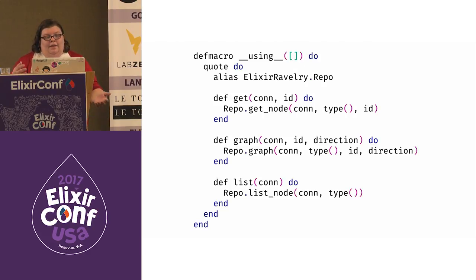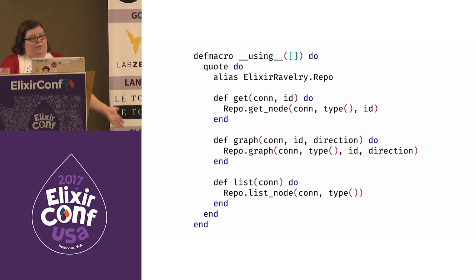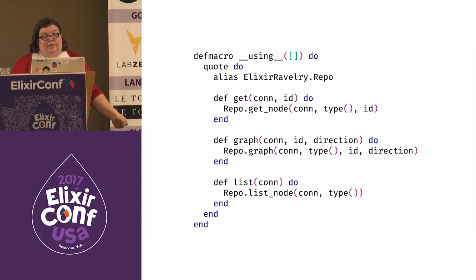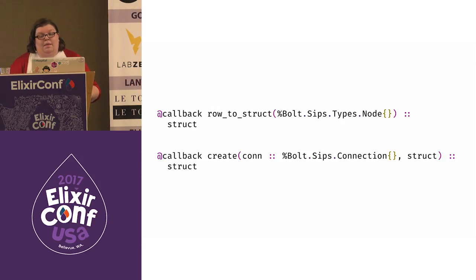As I was writing different repos for different nodes and relationships, I noticed a pattern of writing the same code over and over again. So I pulled out a macro to make it more generic for all the nodes, with a similar one for all the relationships. This macro defines a default implementation for get, graph, and list for nodes as they don't depend on the types of individual fields. Because there's no Ecto adapter, we can't use the types in Ecto Schema, and instead we have to do the type conversions manually.